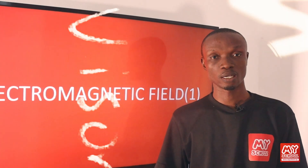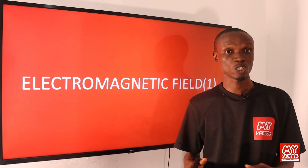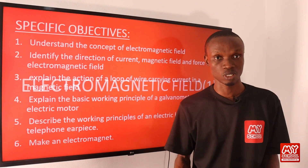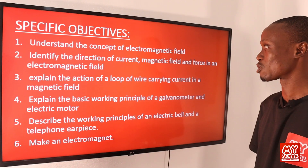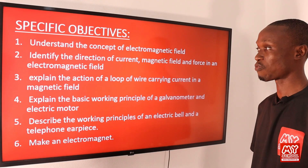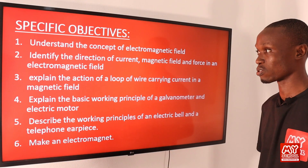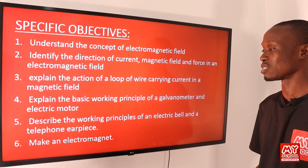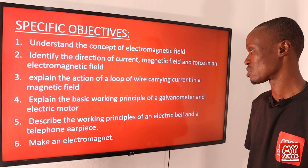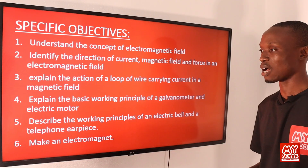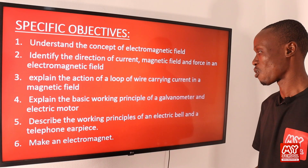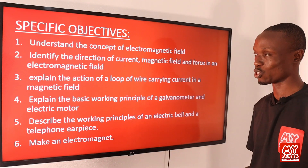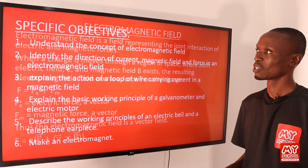Welcome back. We shall be considering the first part of electromagnetic field. Let's quickly run through the objectives for today's video lesson. Objective one: understand the concept of electromagnetic field. Two: identify the direction of current, magnetic field, and the force in an electromagnetic field. Three: explain the action of a loop of wire carrying current in a magnetic field. Four: explain the basic working principles of a galvanometer and electric motors. Five: describe the working principles of an electric bell and a telephone earpiece. Six: make an electromagnet.